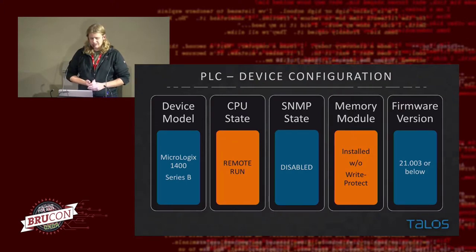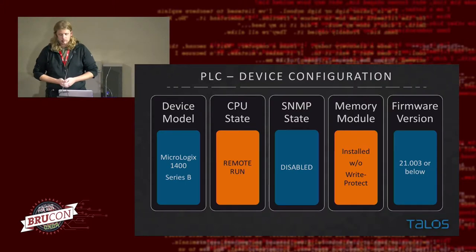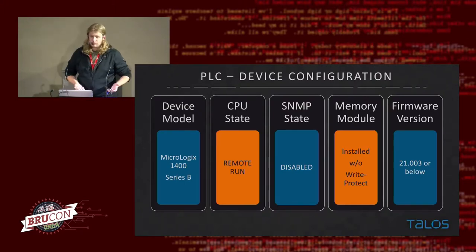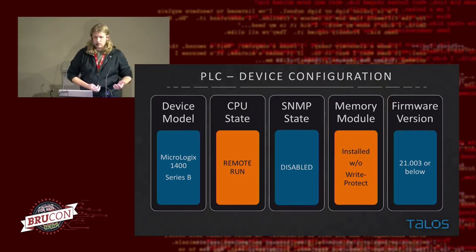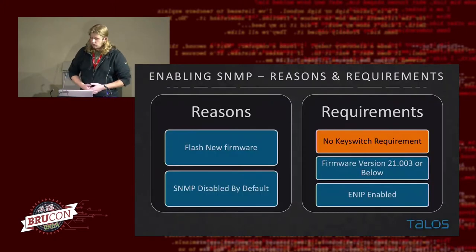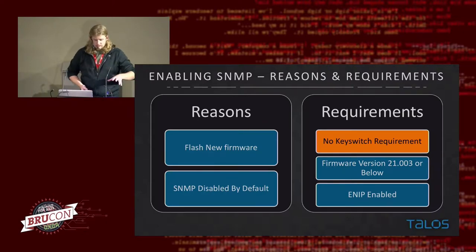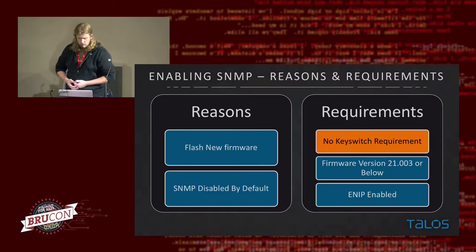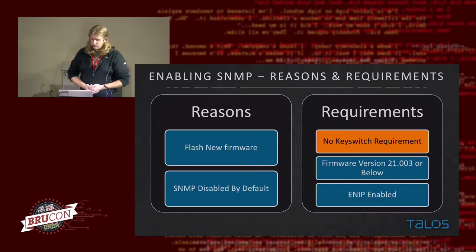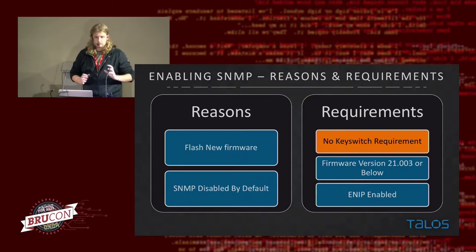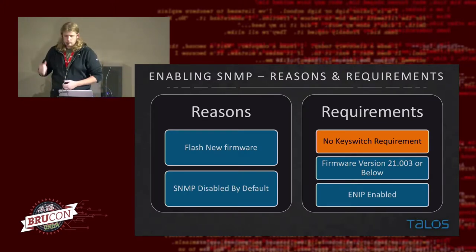The two states I'll call less-than-default are the memory module — it's required to have one, but it doesn't come by default — and it needs to be installed without a special write-protect feature, which is normal if you just plug it in. The CPU state, as mentioned, needs to be in remote. First thing we're going to look at is enabling SNMP. It's really important because we're looking to flash the device with new firmware, and the way this device works for flashing leverages SNMP — we can't get into the flashing state without it. It's disabled by default, but does not have a key switch requirement for the way we figured out how to do it.